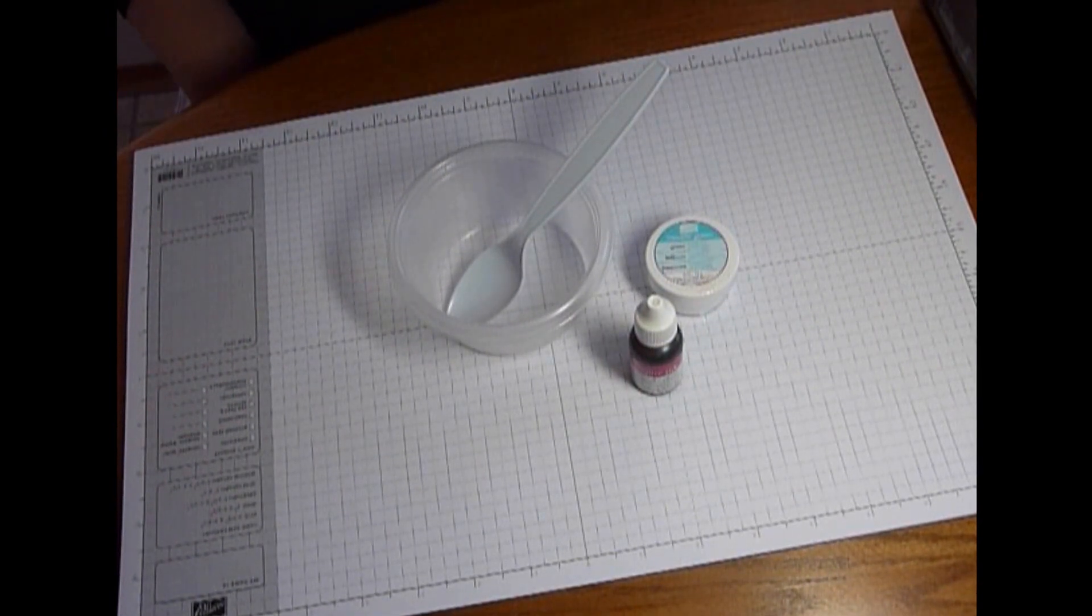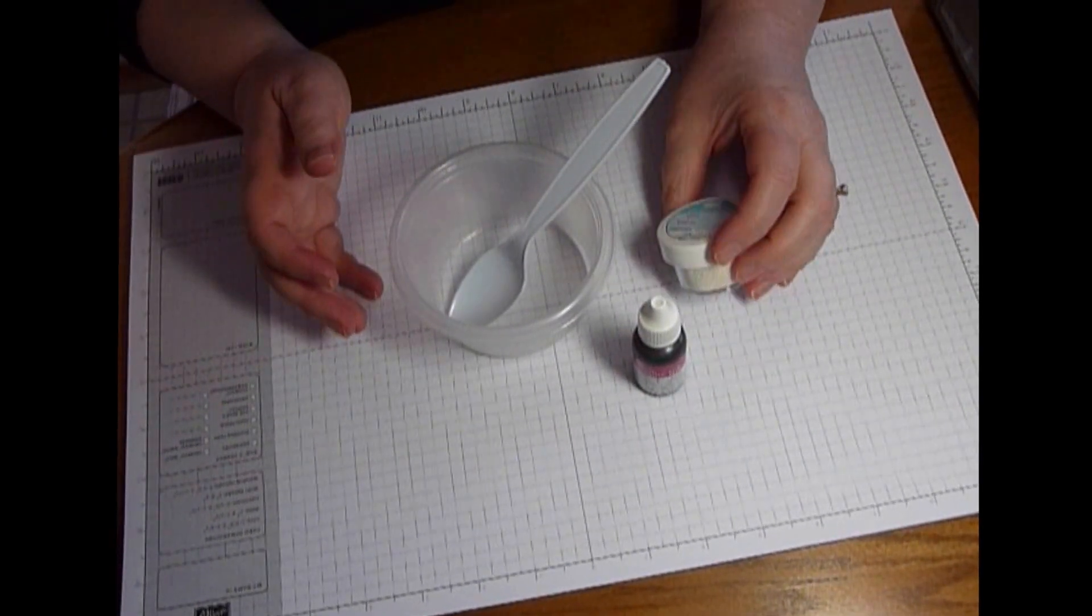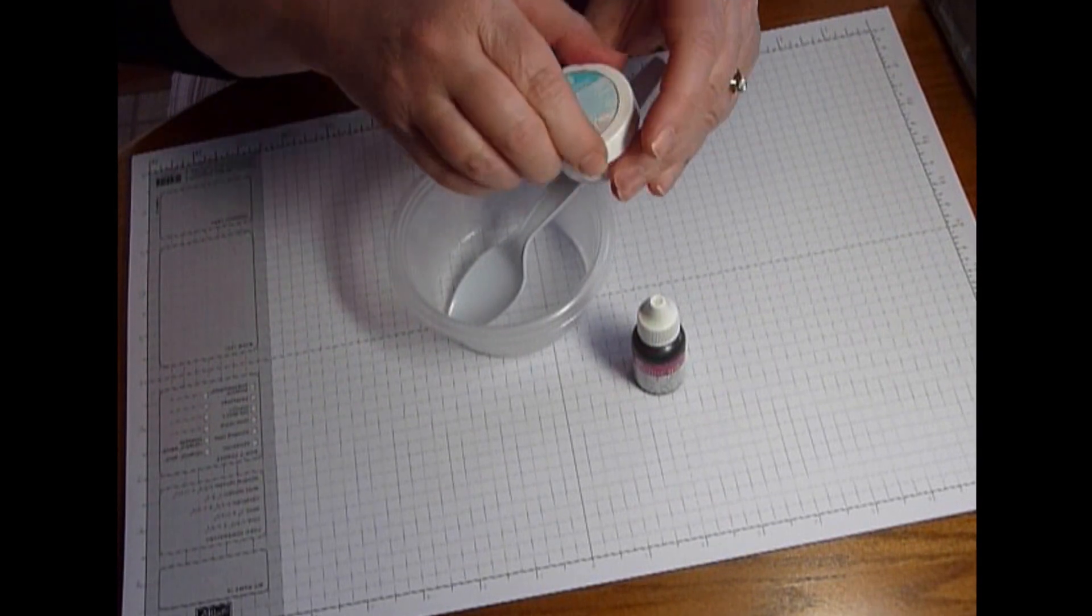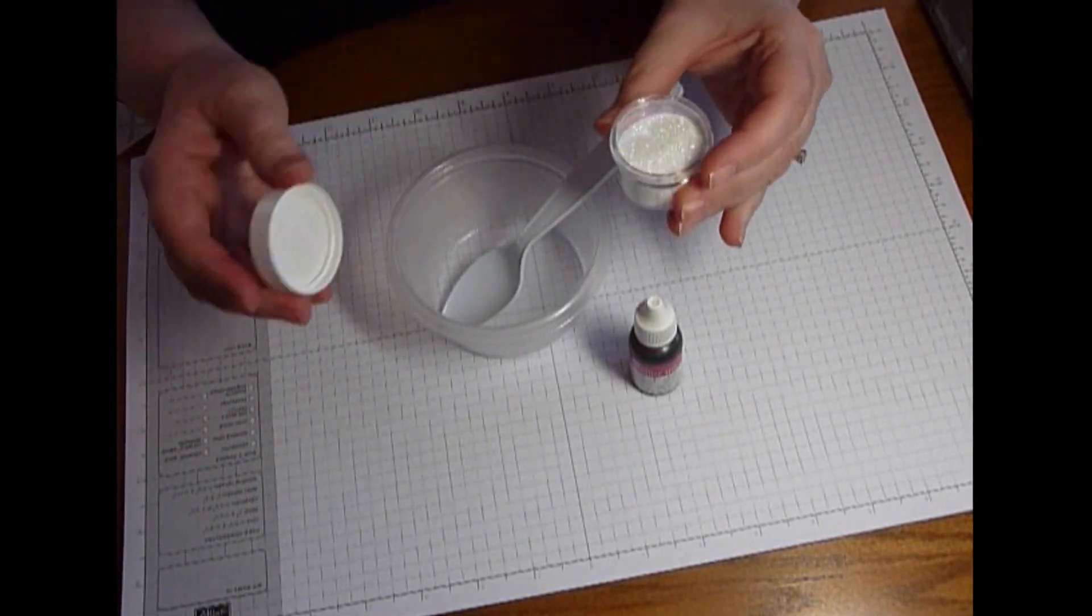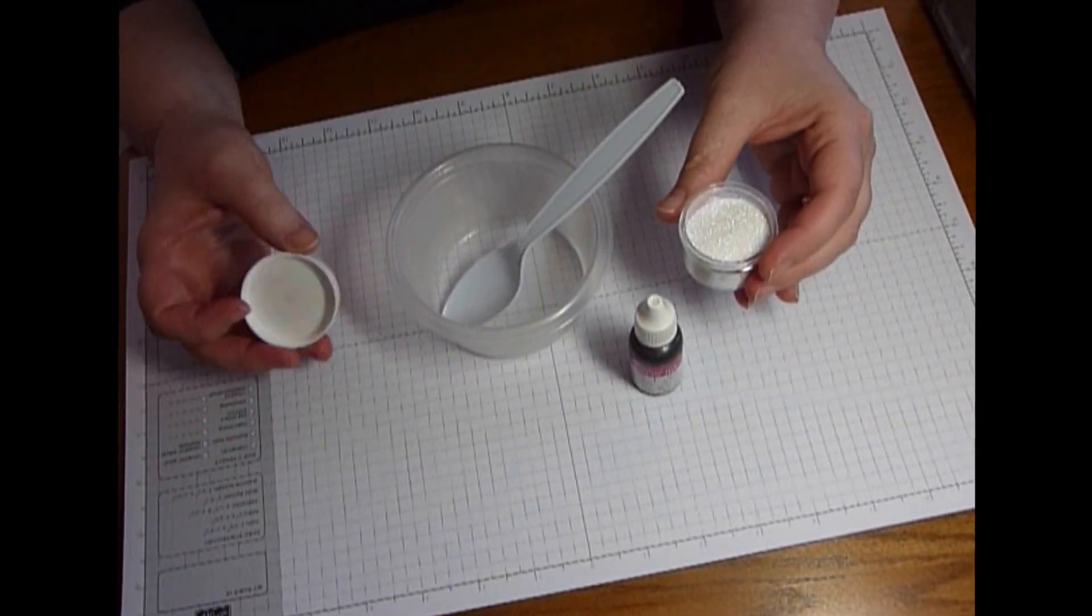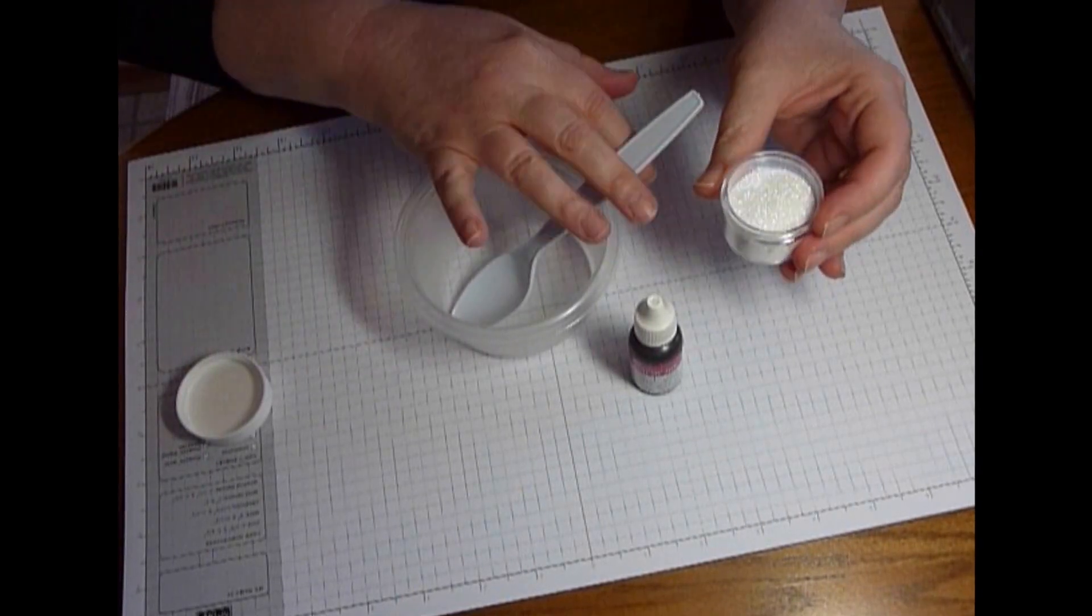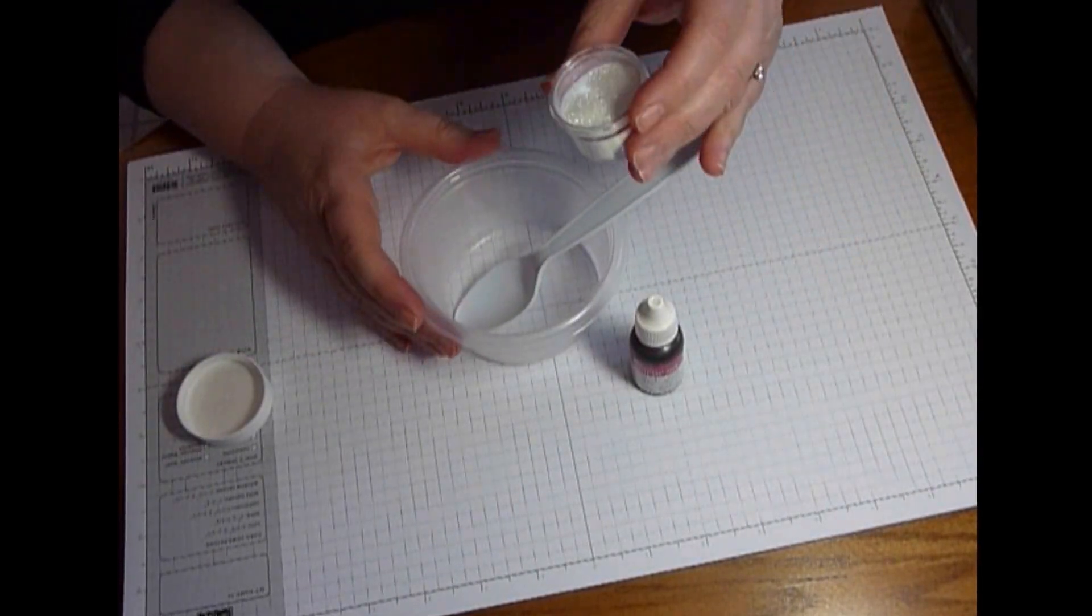In today's video I want to talk about glitter. Stampin' Up! has this wonderful Dazzling Diamonds glitter. Lots of shine to this, but you can see it's white. So I was wondering what would happen if I tried to color it. I think it worked great. Let me show you what I did.